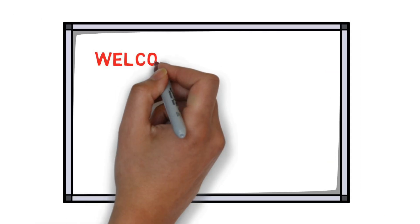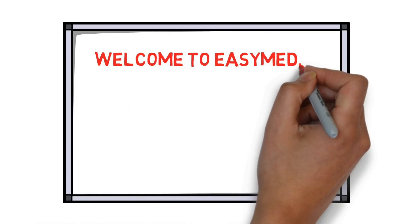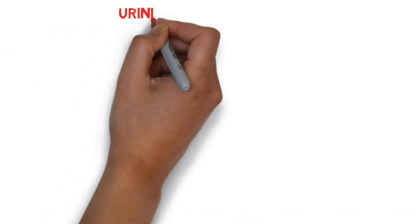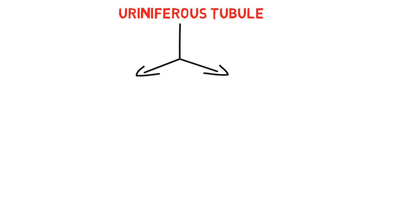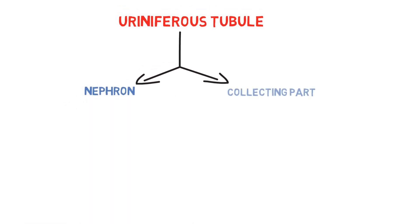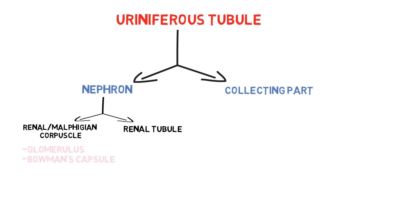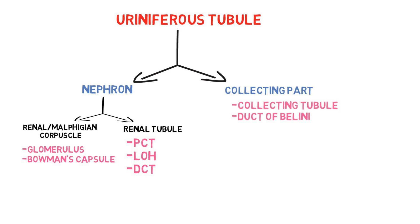Welcome to Easy Med. Today we're going to learn about the microscopic structure of the kidney. Microscopically, the kidney is made up of uriniferous tubules. Each uriniferous tubule is made up of a nephron and a collecting part. The nephron comprises of a renal corpuscle and a renal tubule. Each renal corpuscle consists of two parts: glomerulus and Bowman's capsule. The renal tubule consists of three parts: proximal convoluted tubule, loop of Henle, and distal convoluted tubule.